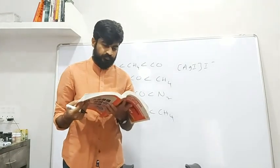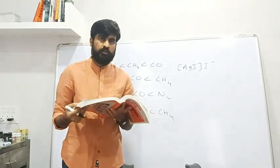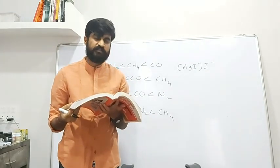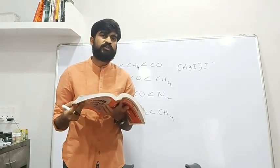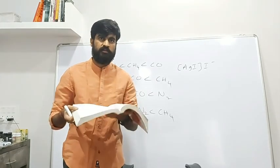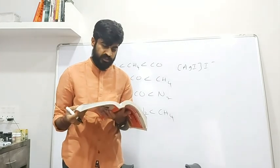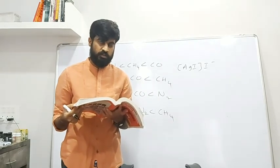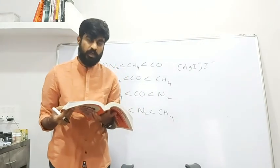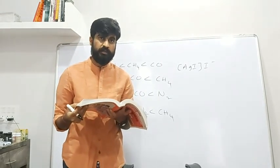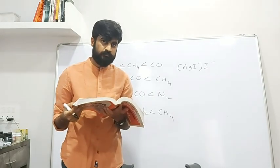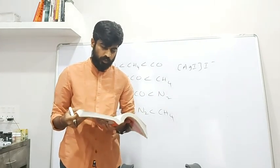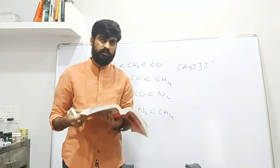Next question: Which has the least gold number? Option A: gelatin. Option B: starch. Option C: albumin. Option D: blood.